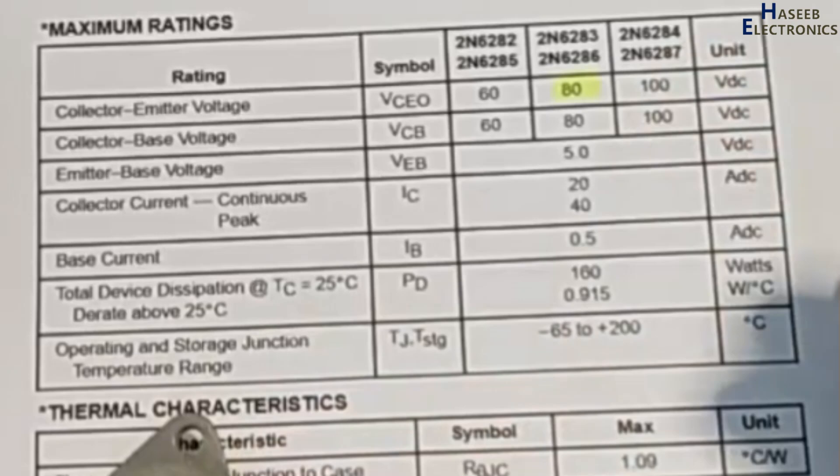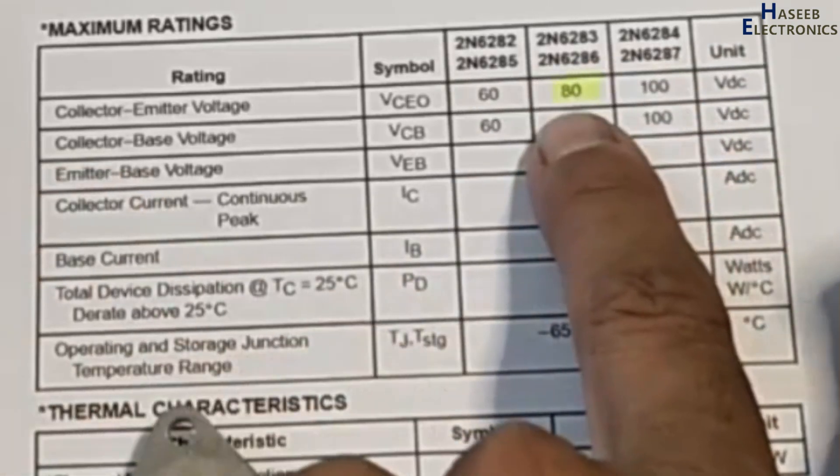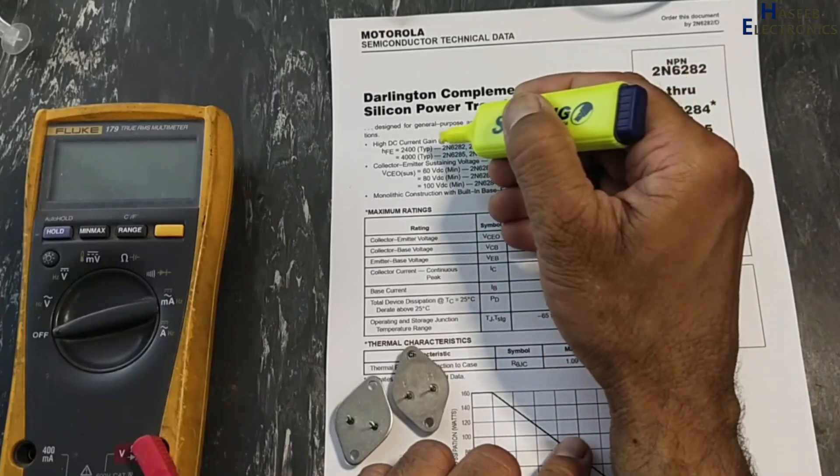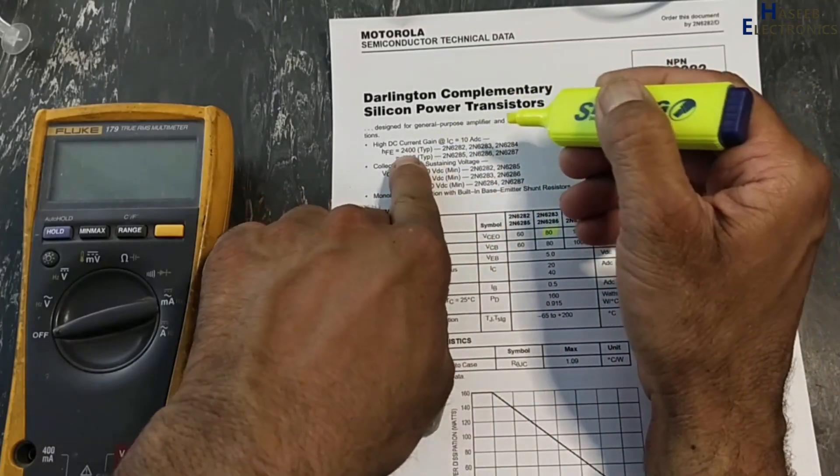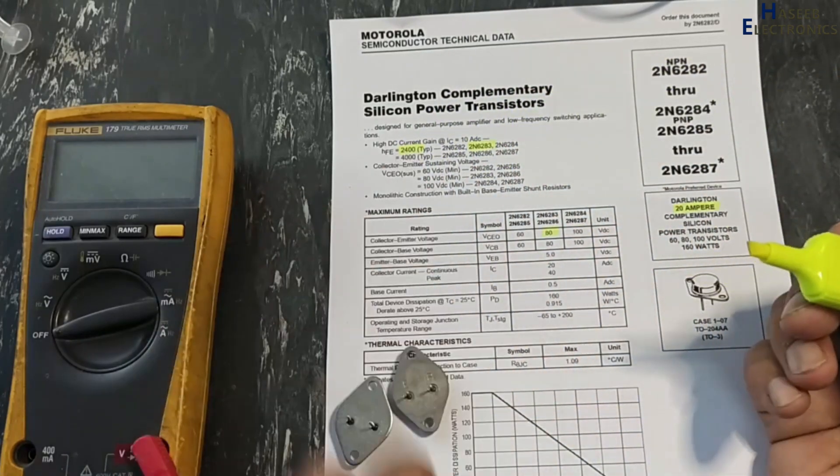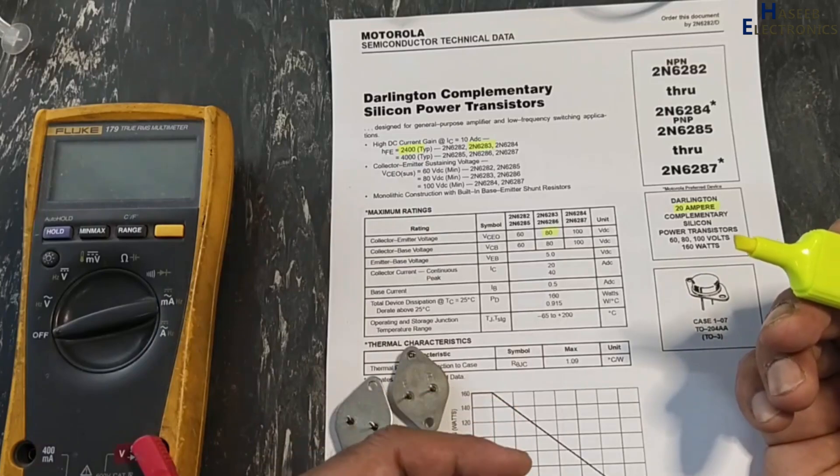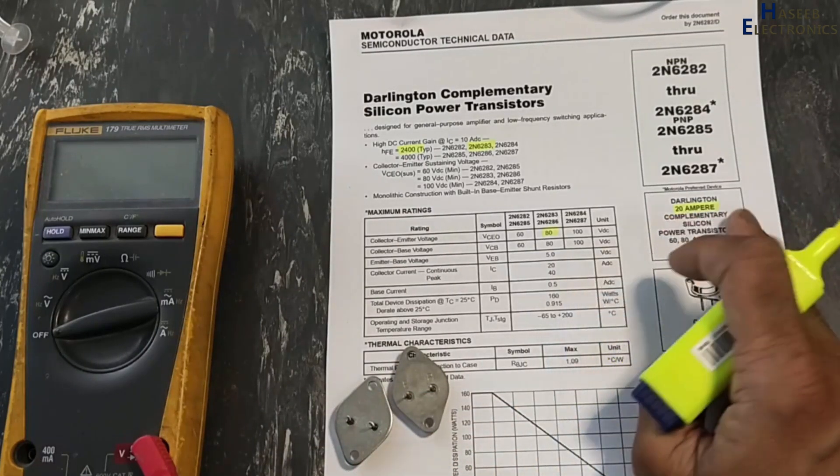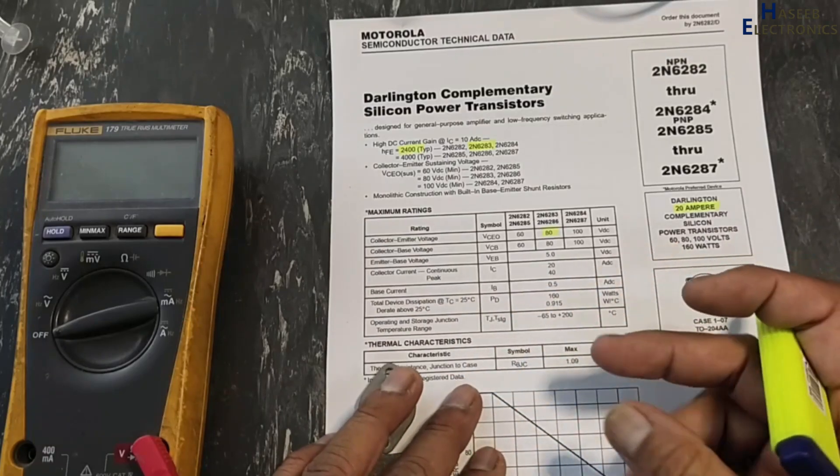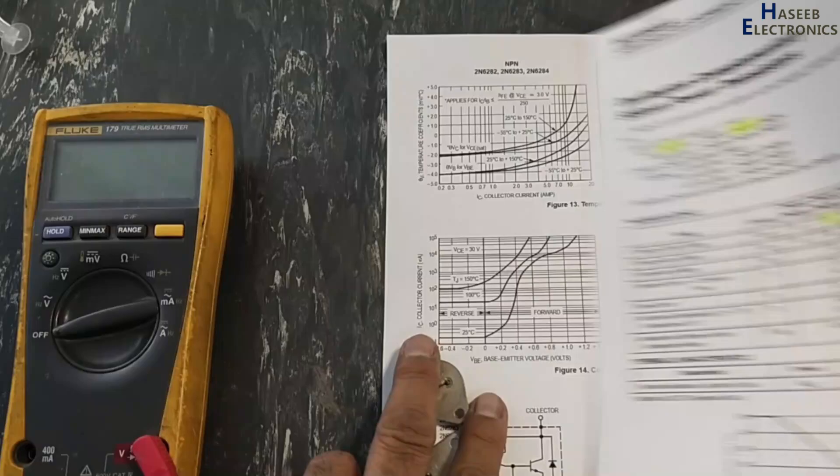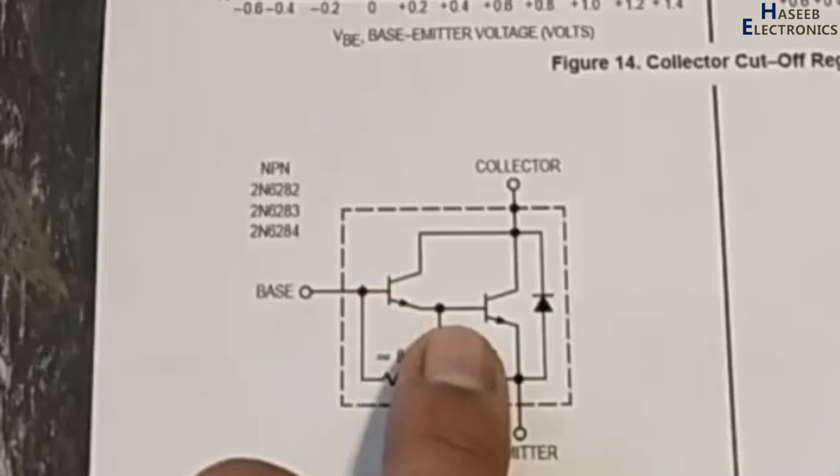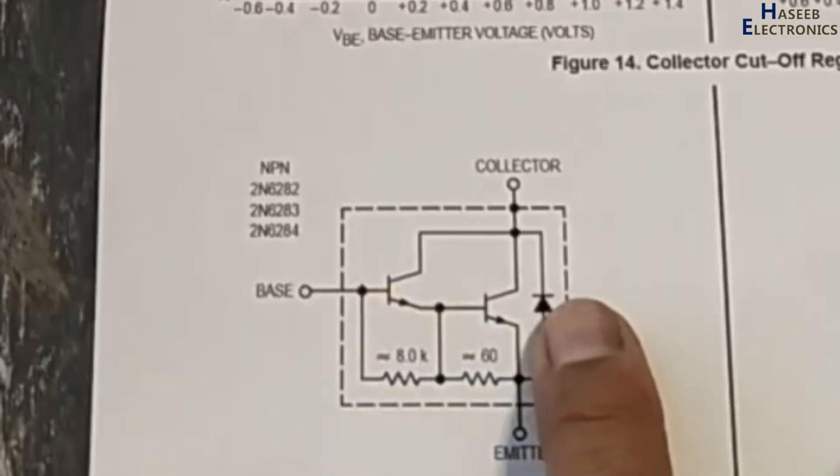6284 will make pair with 6287, that will be 100 volt. So in our case, 6283, 80 volt, 20 ampere, and its gain is 2400 typical. When we are discussing this transistor, that means low base current, high collector current 20 ampere. The maximum rating base current is 0.5 ampere DC. If you see its internal circuit, two transistors, one parasitic diode or body diode, and there is integrated base resistor between first transistor and second transistor emitter.